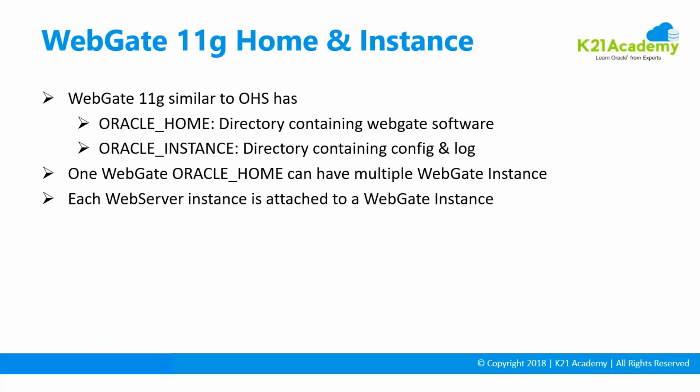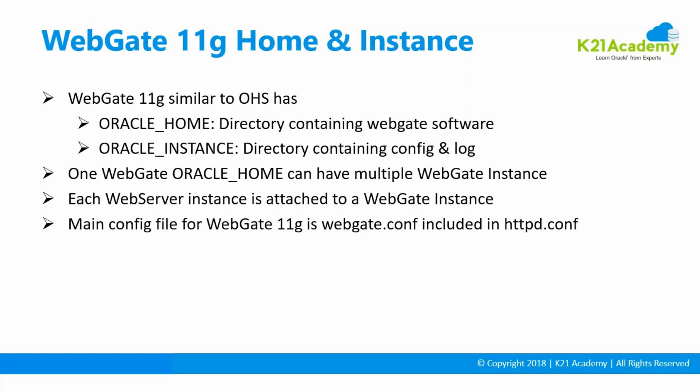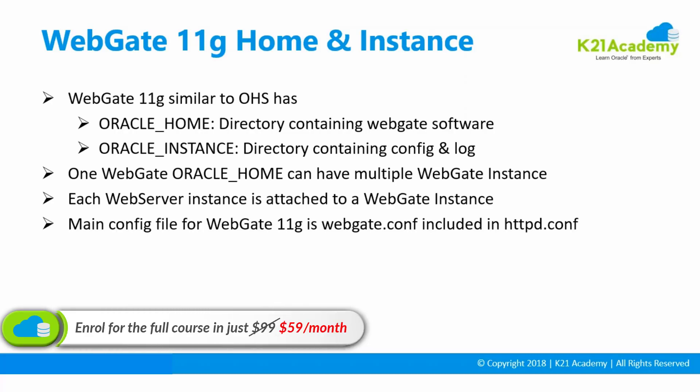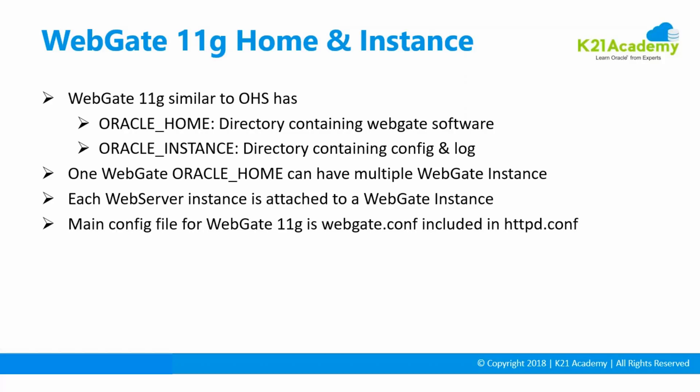There will be a one-to-one mapping between the web server instance and the WebGate instance. The main configuration file for WebGate 11G is called WebGate.conf, which will be included in the httpd.conf file. In eBusiness Suite, httpd.conf includes another file called oracle_apache, which then in turn calls WebGate.conf. We'll cover the eBusiness Suite integration in a dedicated module, as EBS-OAM integration is a separate course.